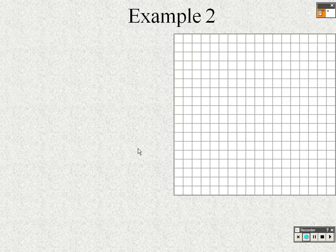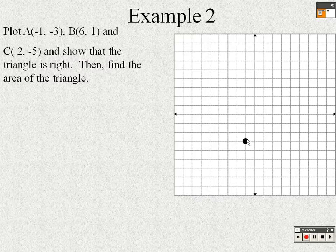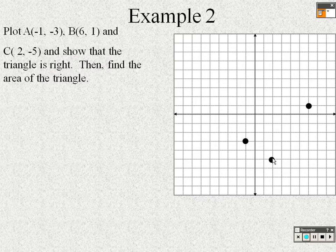Moving to example two: plot the points A = (−1, −3), B = (6, 1), and C = (2, −5), and show that the triangle formed is a right triangle. Plotting each point and connecting them forms a triangle.